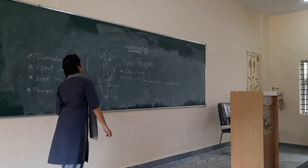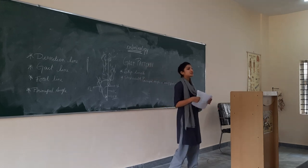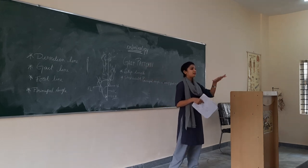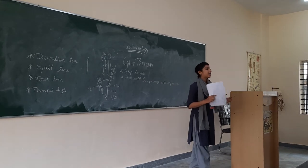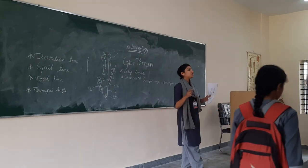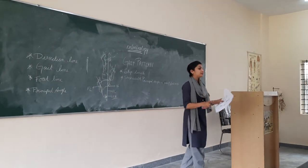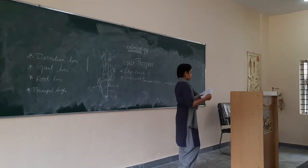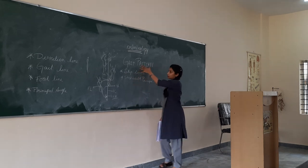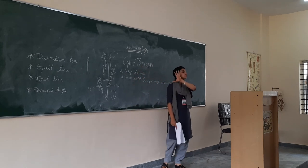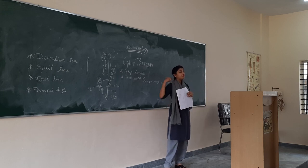The gait line varies in stout persons — those who are really short in terms of their height — as well as pregnant women and drunk individuals. They keep their feet really wide apart to maintain balance so that they do not fall. All these parameters collectively constitute the gait pattern, which helps us understand the uniqueness and individualistic characteristics of the footprint.